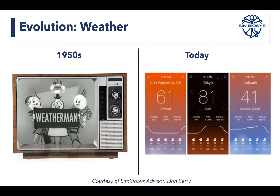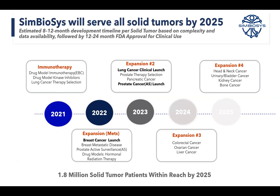The platform is designed for all solid tumors, but in the regulatory setting we have to be very focused. We picked early-stage breast cancer because, as you'll hear throughout SWOG this year, there is a need for upfront biomarkers to help physicians decide how to de-escalate or escalate, especially in light of what's happening in the triple-negative setting. We intend over 2025 to expand to all solid tumors, with lung and prostate being next.